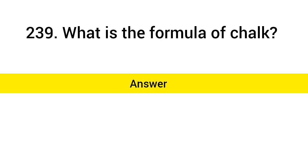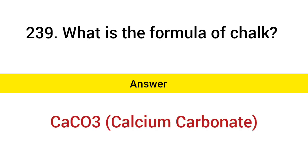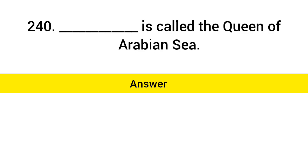What is the formula of chalk? Answer: CaCO3, Calcium carbonate. Which city is called the Queen of the Arabian Sea? Answer: Kochi.